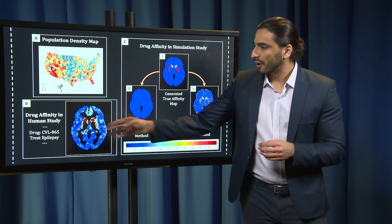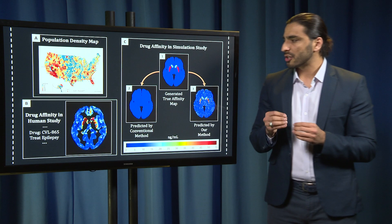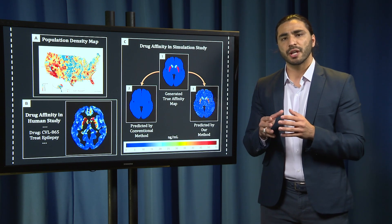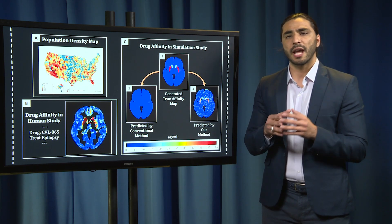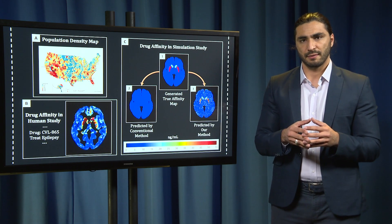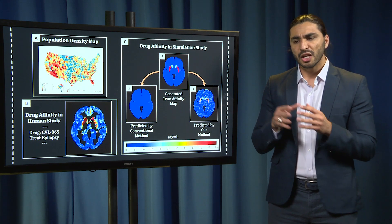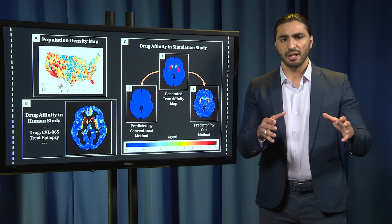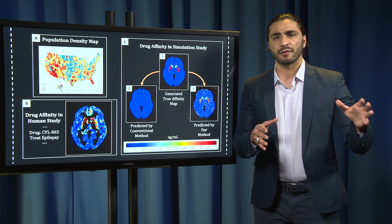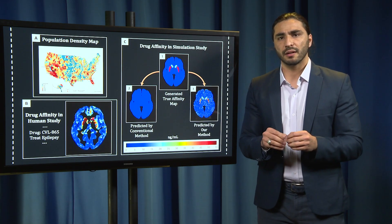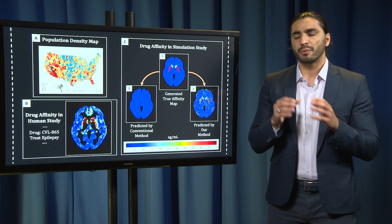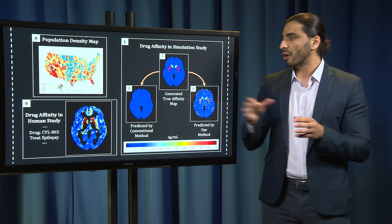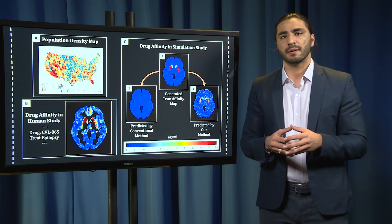In B, we studied the drug CVL-865, which has potential to treat epilepsy. This drug has varying affinity to different parts of the brain, which we were able to detect using our methodology in a human study.